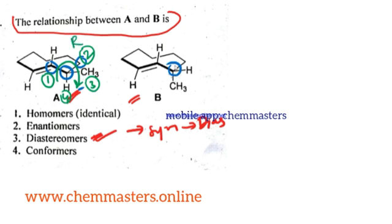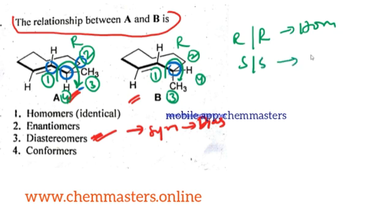Now just come to the second structure where first priority for this, second for this, third for this, and fourth for this. Now it is simply clockwise direction. We know that whenever R and R relation is there, that is simply indicating homomer or simply identical, yes that is identical or homomer in relationship.